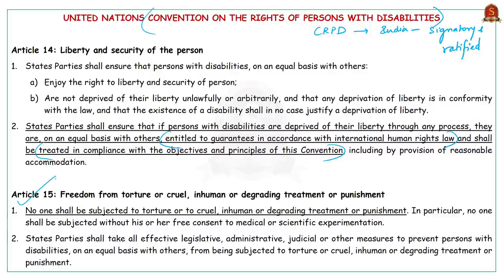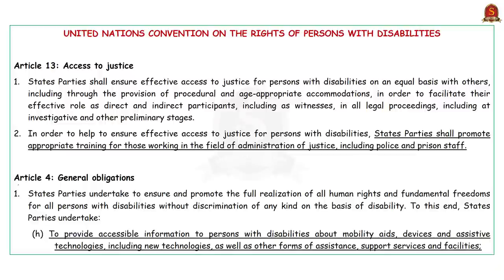These are the other relevant provisions in relation to prisoners with disability. Additionally, under Article 4, the convention obligates nations to provide accessible information to persons with disabilities about mobility aids, devices, and assistive technologies, as well as other forms of assistance, support services, and facilities.